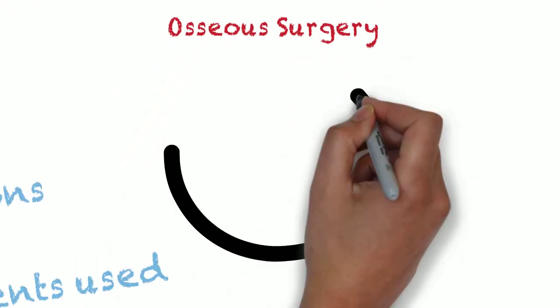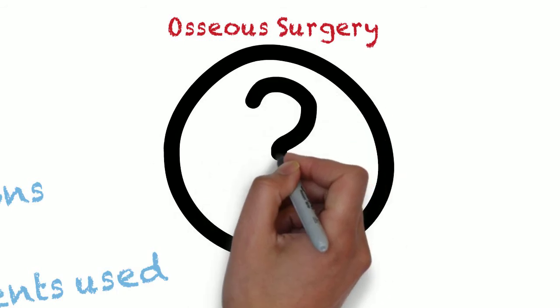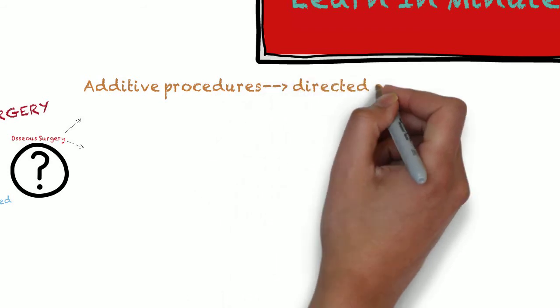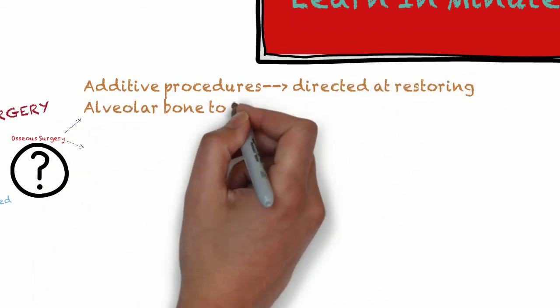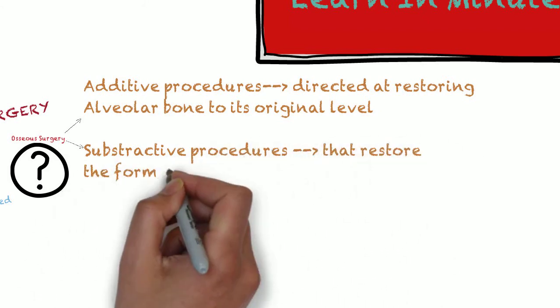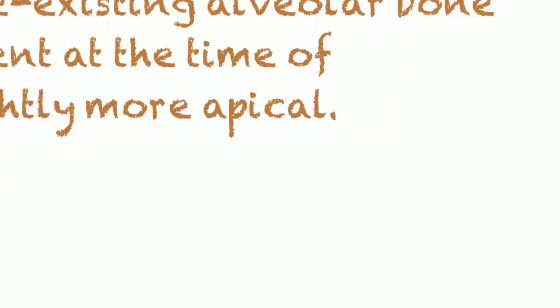Osseous surgery is defined as a procedure by which changes in the alveolar bone can be accomplished to rid it of deformities induced either by periodontal disease or related factors. It could be of two types: additive procedures directed at restoring the alveolar bone to its original level, and subtractive or resective procedures that restore the form of the pre-existing alveolar bone to a level present at the time of surgery or slightly more apical to it.